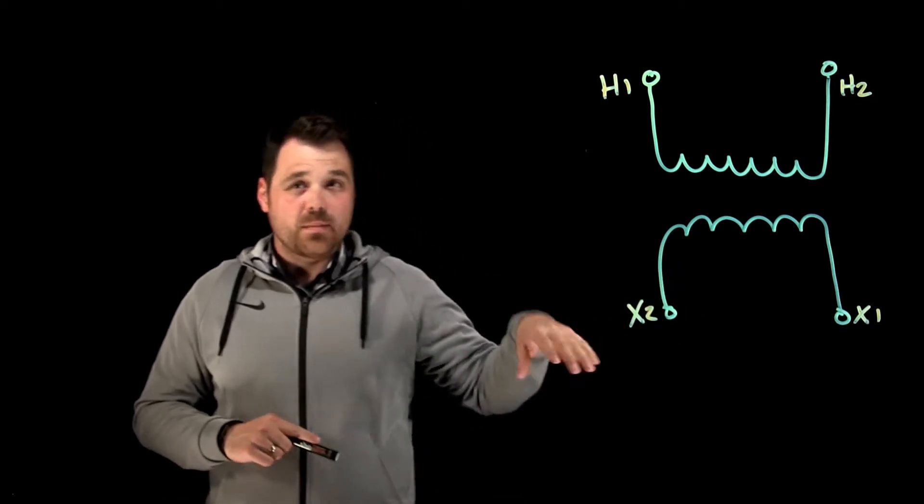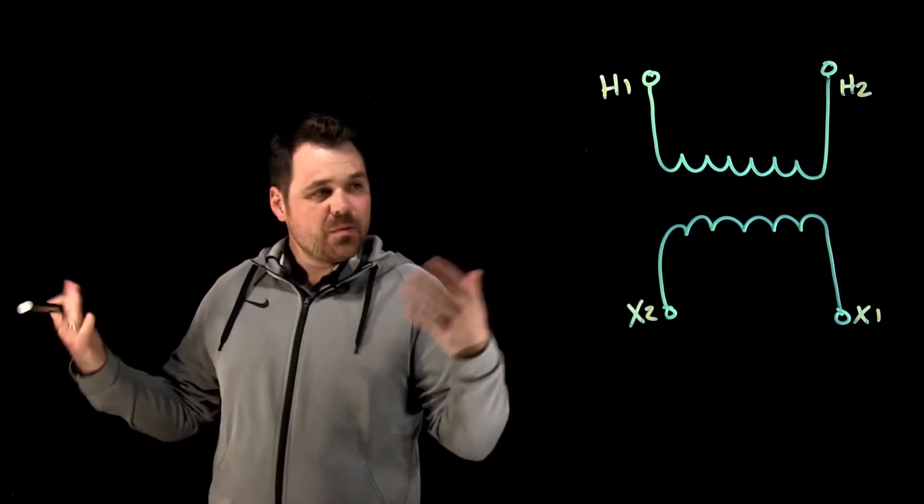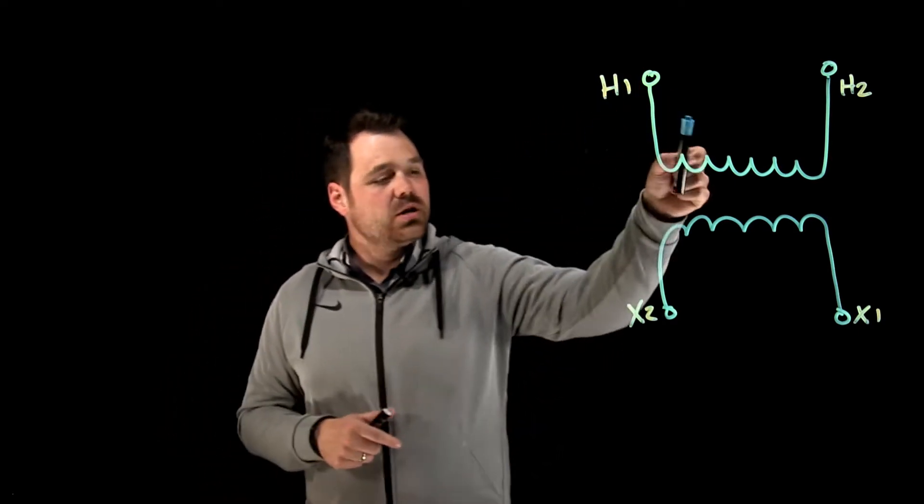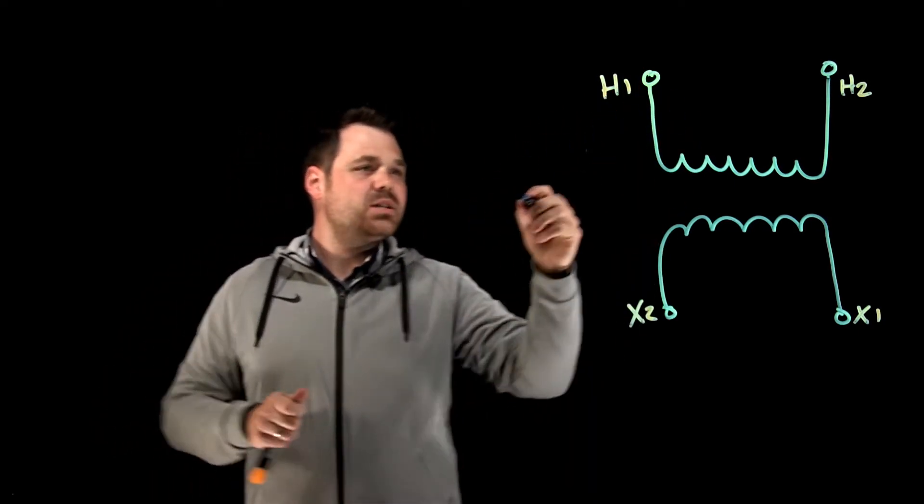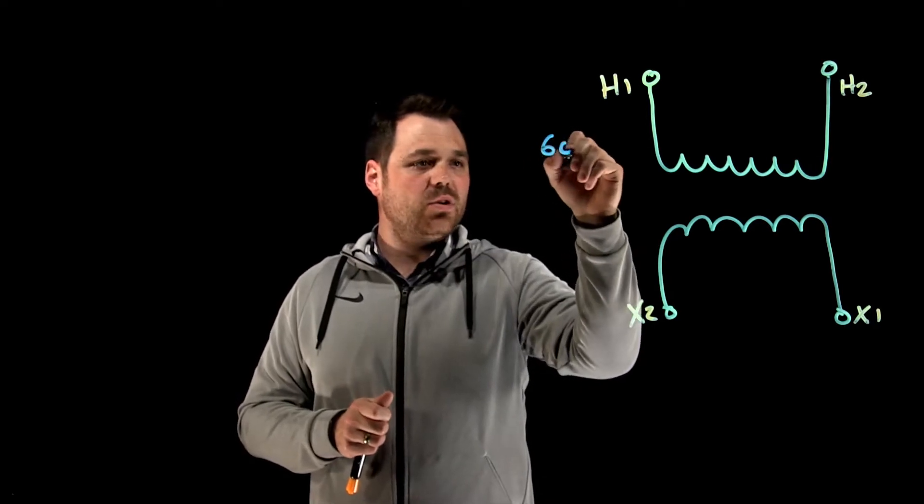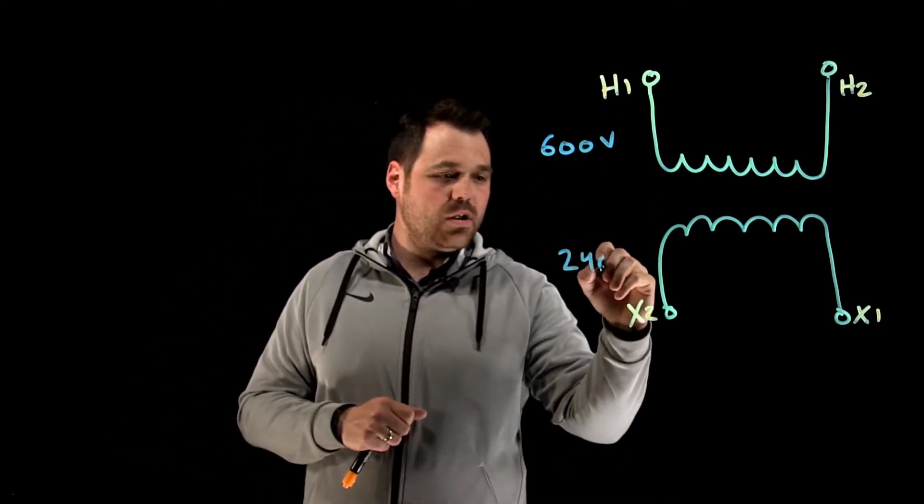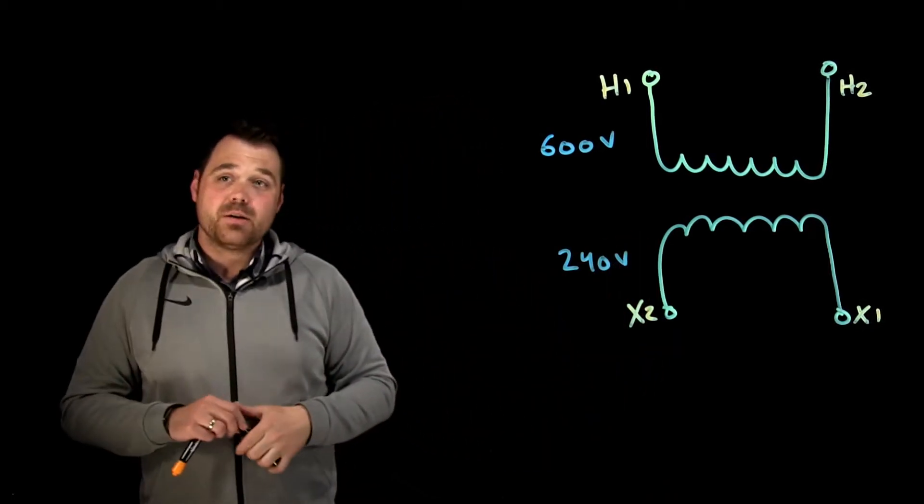So that's our transformer. We've got H windings and X windings. H's for high voltage and X's for low voltage. Let's say this transformer is a 600 volt winding up here and a 240 volt winding down there.